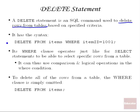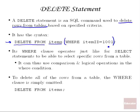It has the syntax shown here. It starts with the keywords DELETE FROM, and then you specify the name of the table that you want to delete rows from. And then, like our SELECT statement, it has a WHERE clause, which is how you define which rows you want to delete. So this statement here is saying: delete all the rows from the items table where the item ID equals 1001. We know our item ID is a primary key, so there's only going to be one row deleted.